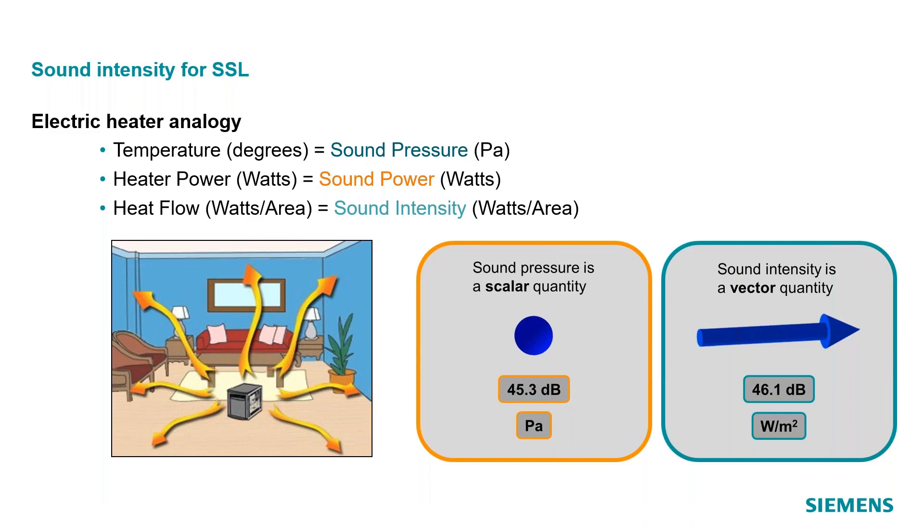That's all we get. And with intensity, because we're using more than one transducer, we can actually calculate something that's a vector quantity. And it says it's 46.1 dB watts per meter squared in this direction, the direction of that arrow. So sound intensity has this directionality to it of a vector quantity that we don't get with just a sound pressure measurement. We're going to use that to our advantage when we do it for sound source localization.